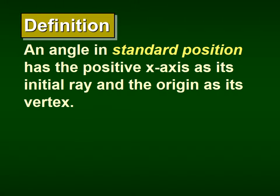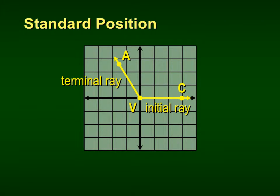First, let's start with a definition. An angle is in standard position if it is created using the positive x-axis as its initial ray and the origin as its vertex. Think of the coordinate plane — the x-axis is the initial ray, and the origin of the coordinate plane is the vertex of the angle.